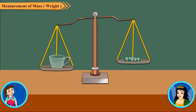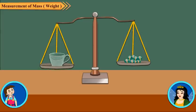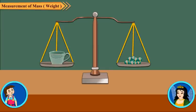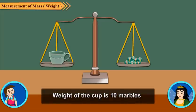The pans are still not at the same level. Put some more marbles till the pans come to the same level. We see that there are 10 marbles in the pan. So the weight of the cup is 10 marbles.